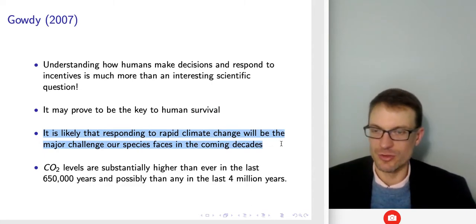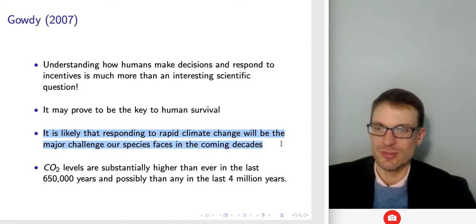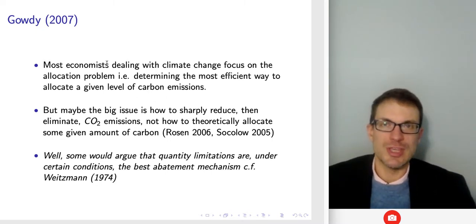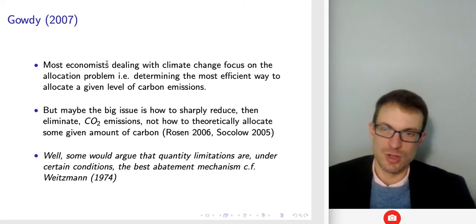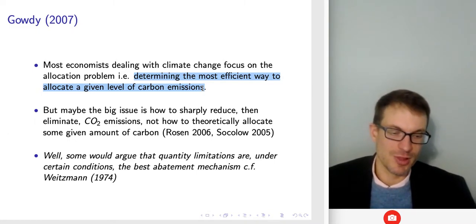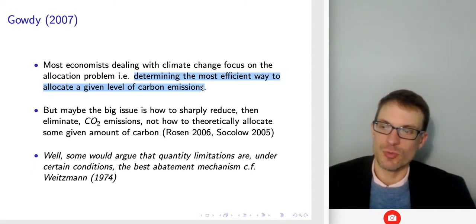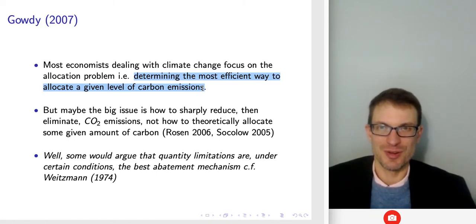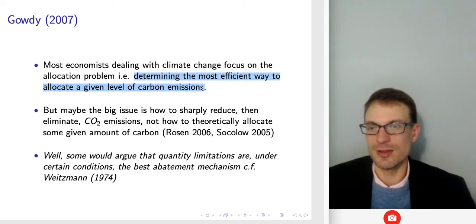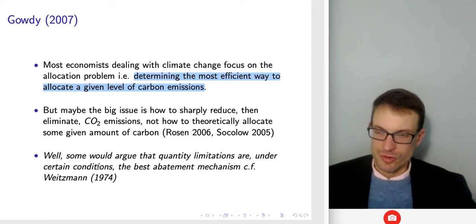The central idea in the paper is that responding to rapid climate change will be the major challenge faced by humans in the coming decades. Economists so far have focused on the allocation problem — for instance, the most efficient way to allocate a given level of carbon emissions. Something like a cap and trade system is a really efficient way to reduce pollution because it allows for specialization according to comparative advantage, letting those who can specialize in pollution abatement do that, leading to the smallest amount of pollution given the circumstances.